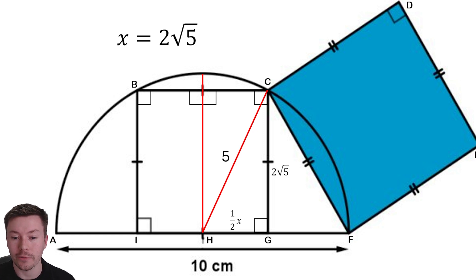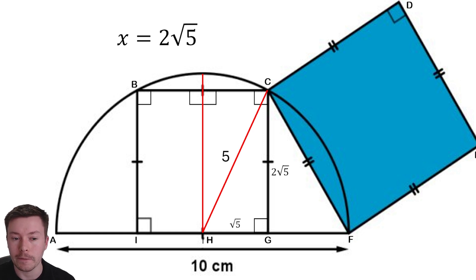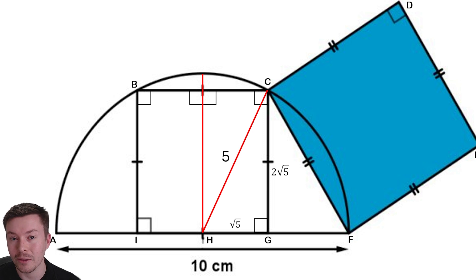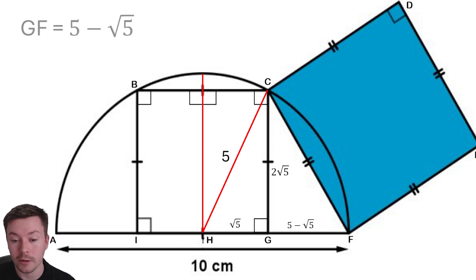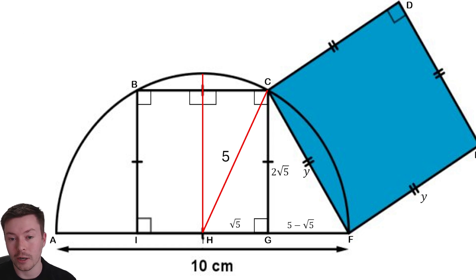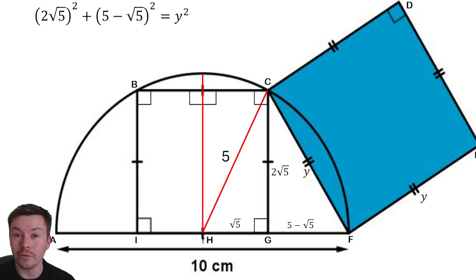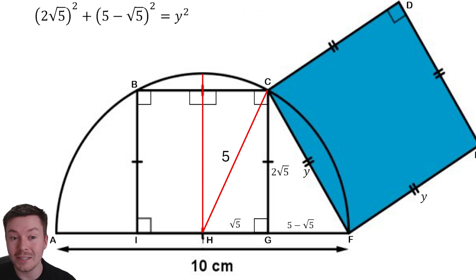We can put that on our diagram as the length from C to G. The length H to G is half of X, so that will be √5. The next thing we can do is work out the length G to F. We know the radius has a length of 5, so G to F must have a length of 5 minus √5, because we're subtracting the length HG which is √5. We have a right-angle triangle again, so I'm going to call the side length of the blue square Y. We're going to use Pythagoras one more time: (2√5)² + (5 − √5)² = Y². And actually, Y² is the area of the blue square CDEF, so we won't need to do anything else once we've worked out Y².